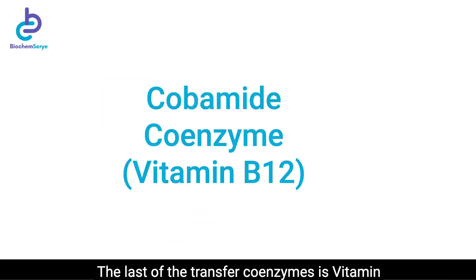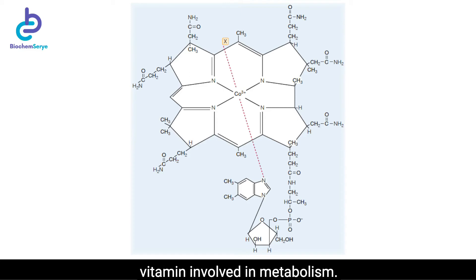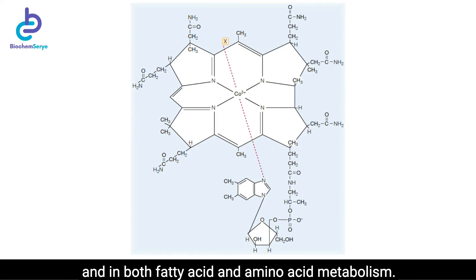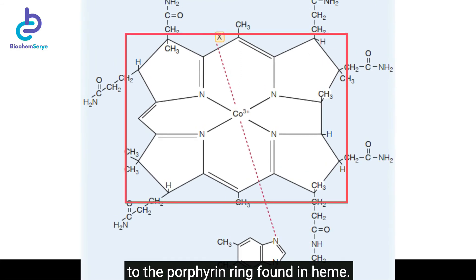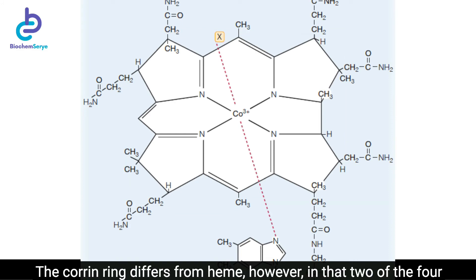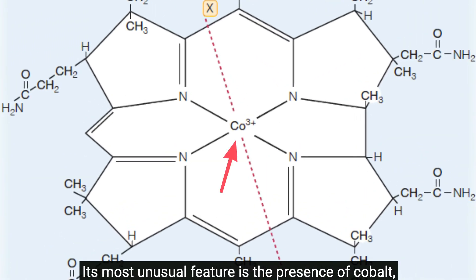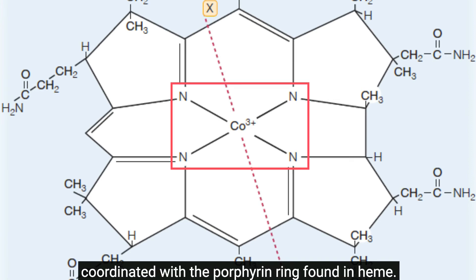The last of the transfer coenzymes is vitamin B12, also known as cobamide coenzyme. Vitamin B12 or cobalamin is a water-soluble vitamin involved in metabolism and is a cofactor in DNA synthesis and in both fatty acid and amino acid metabolism. The structure of cobamide coenzyme is complex. It contains a corrin ring, which is similar to the porphyrin ring found in heme, but differs in that two of the four pyrrole rings are joined directly rather than by a methylene bridge. Its most unusual feature is the presence of cobalt coordinated with the corrin ring, similar to the iron coordinated with the porphyrin ring in heme.